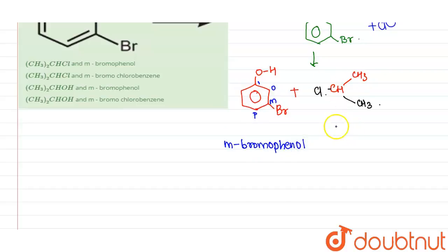And this compound can be written as (CH3)2CHCl. So let's see the product here.